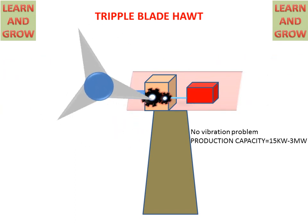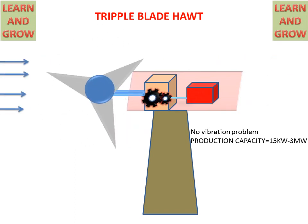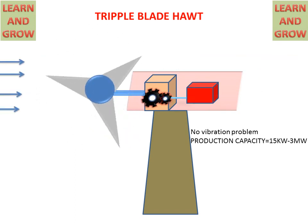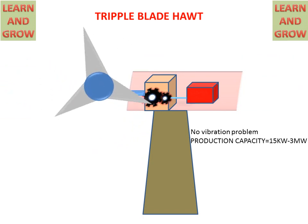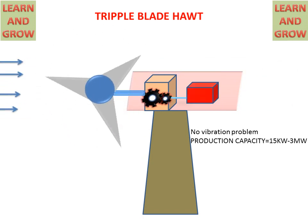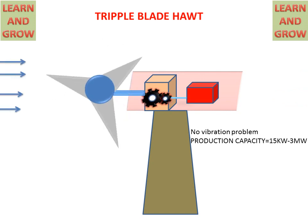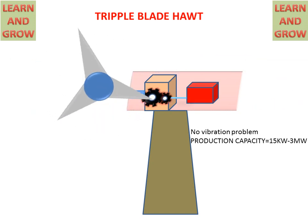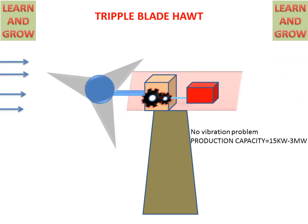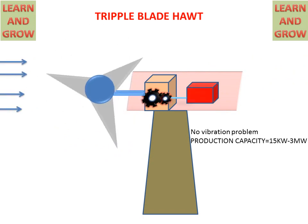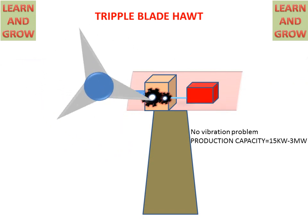Nowadays, multi-blade horizontal axis wind turbines are widely used, which have no vibration problem and also have high production capacity. Thank you for watching this video; for more updated videos you can subscribe to my channel, Learn and Grow.